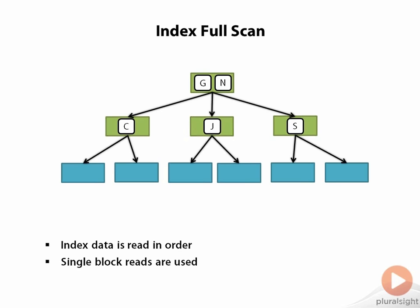In an index full scan operation, Oracle reads the entire contents of the index in sorted order. The typical reason for doing this is that there's an order by clause in the query and every column in the order by clause is contained in the index and the order of the columns in the order by clause matches the order of the columns in the index.